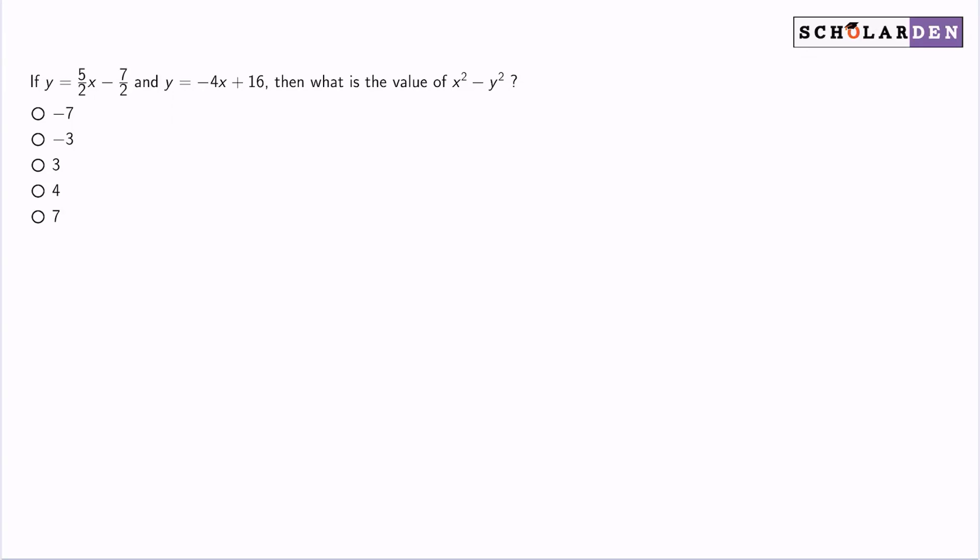Welcome back everyone. If y equals 5 over 2x minus 7 over 2 and y equals negative 4x plus 16, then what is the value of x squared minus y squared? The answer to this question is negative 7.